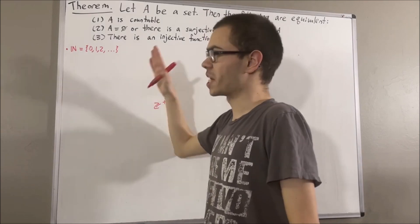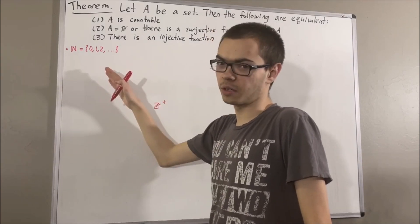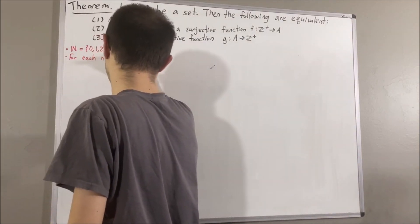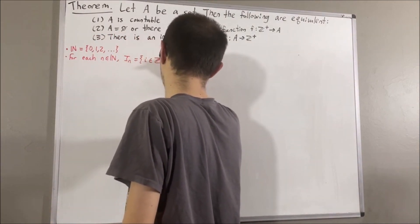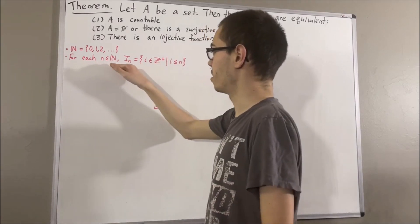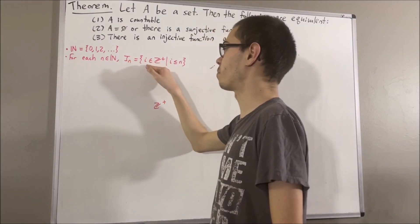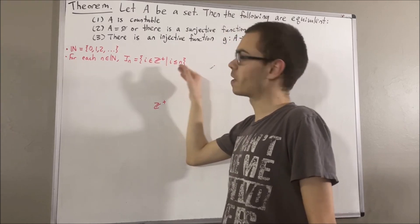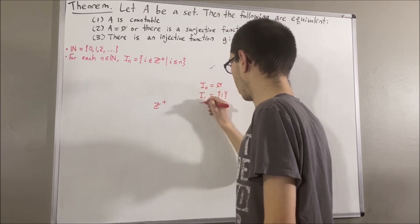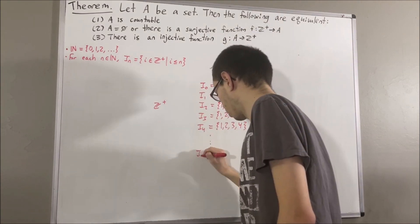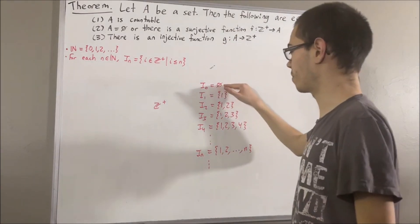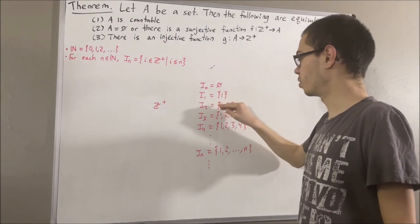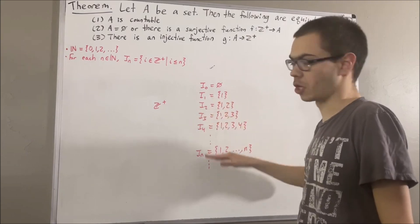For each natural number n, we define the following set: the set of positive integers i such that i is less than or equal to n. For example, I₀ is the empty set, I₁ is the set containing 1, I₂ is the set consisting of 1 and 2, and so on.